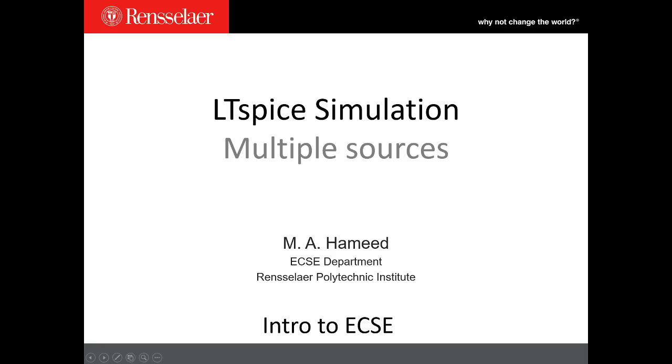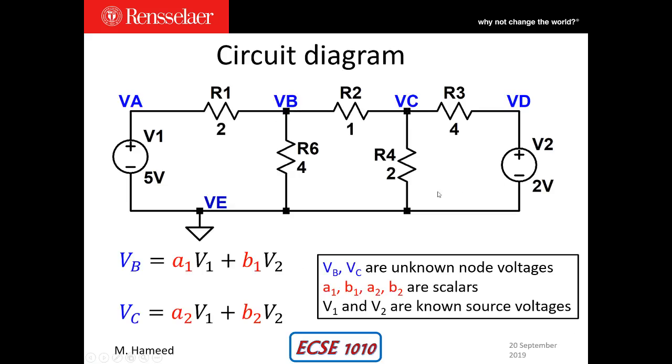The circuit that we are going to use is the same one that we used in an earlier video. It has five nodes. Out of these five nodes, VA, VD, and VE are known to be 5 volts, 2 volts, and 0 respectively, and the two unknown voltages are VB and VC.